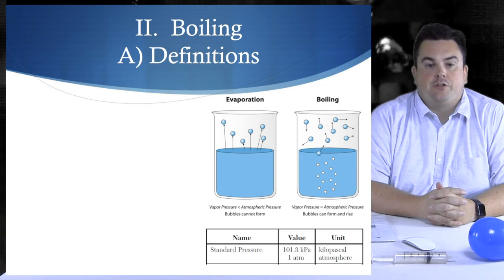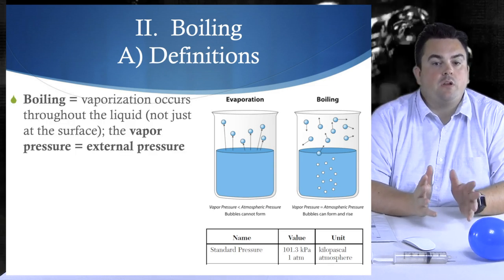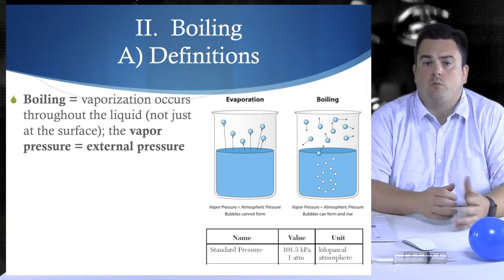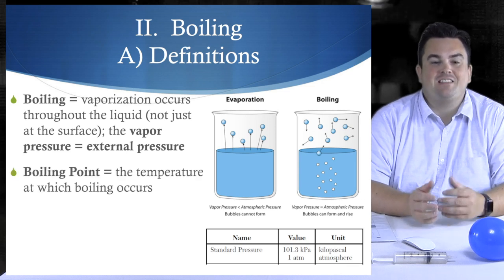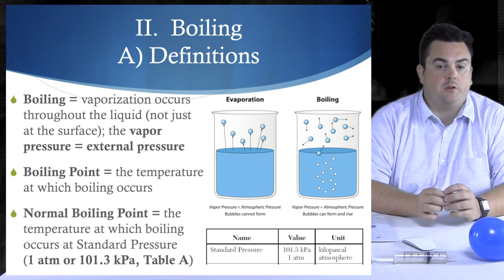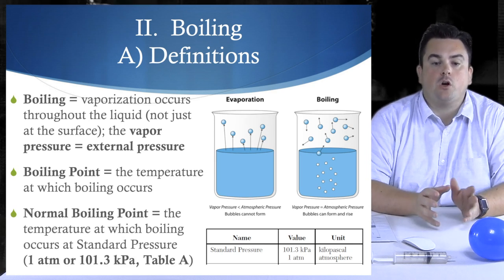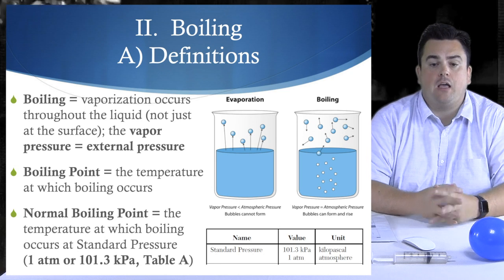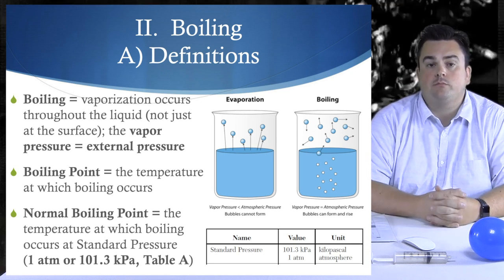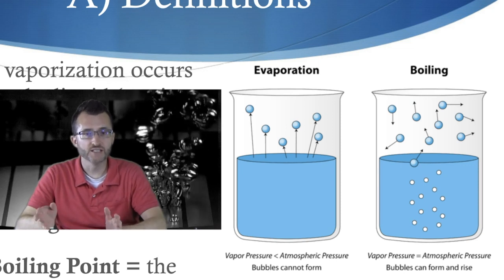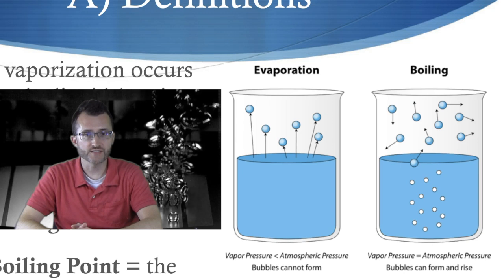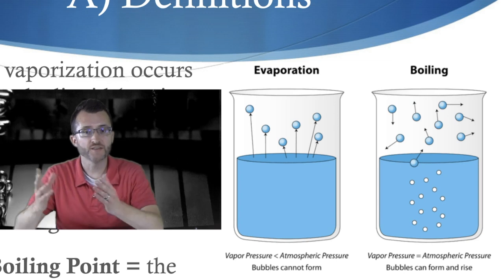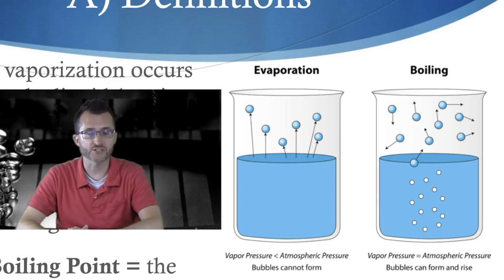Boiling. Let's look at some definitions. So boiling is where vaporization occurs throughout the liquid, not just at the surface. The vapor pressure will equal the external pressure. Boiling point is the temperature at which boiling occurs. Normal boiling point, the temperature at which boiling occurs at standard pressure. Now standard pressure is one atmosphere or 101.3 kPa. Both those values can be found on table A. Looking at our picture, this nicely shows that evaporation is where liquids turn to gas only at the surface. Whereas in boiling, we actually have liquid turn to gas anywhere in the liquid. And for this to be true, the vapor pressure has to equal the atmospheric pressure.